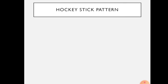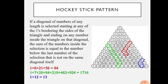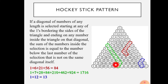Next is the hockey stick pattern. This is an interesting concept in Pascal's Triangle. The hockey stick shape: if you take a line of numbers along a diagonal and add them, the sum equals the number at the end of the stick. For example: one plus six is seven, seven plus twenty-one is twenty-eight, twenty-eight plus fifty-six is eighty-four. Also, one plus three plus six equals ten. This is the hockey stick pattern — the third trick.